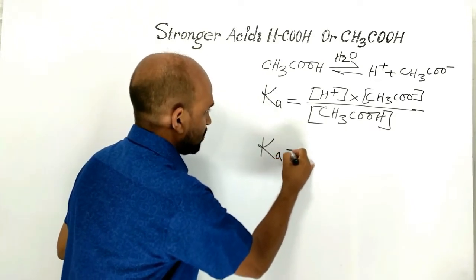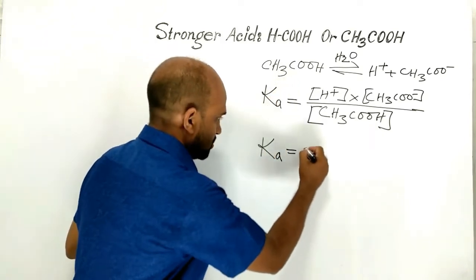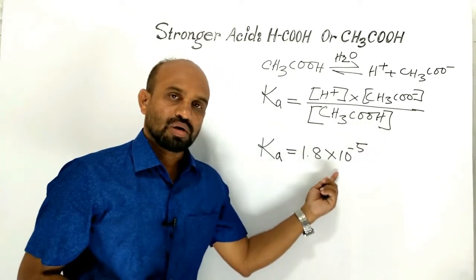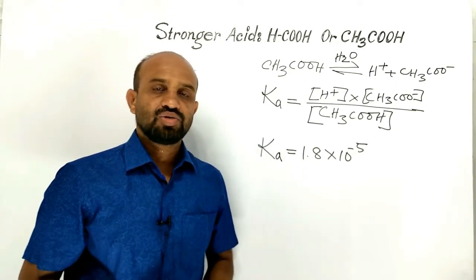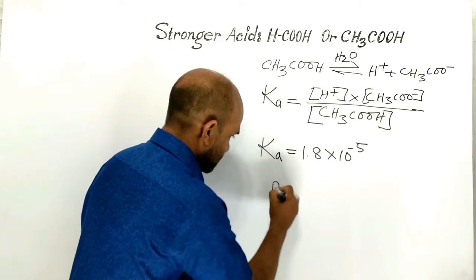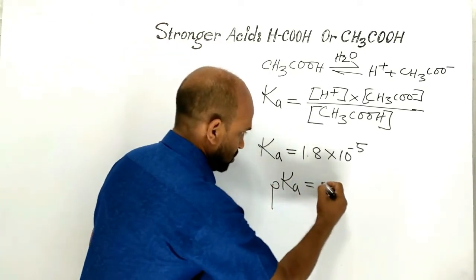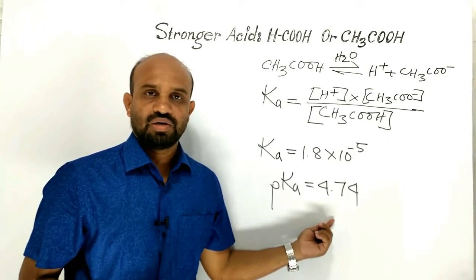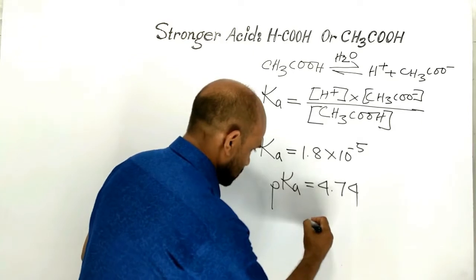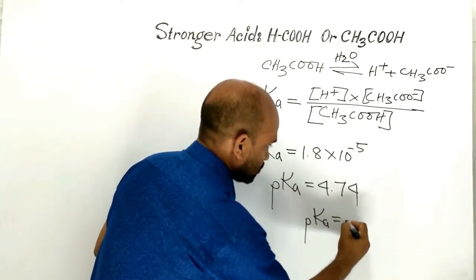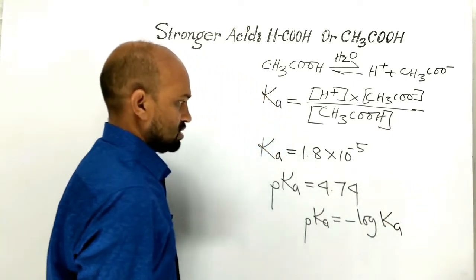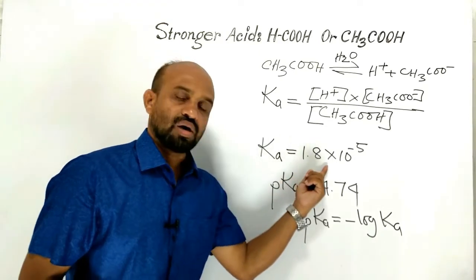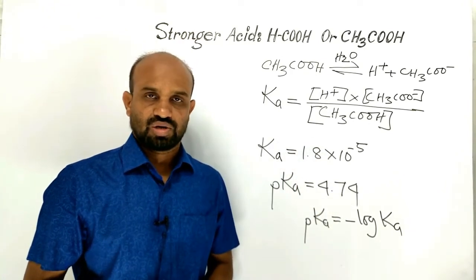Experimentally, the value of Ka for acetic acid is 1.8 × 10⁻⁵. Higher the value of Ka, the stronger the acid. The pKa of acetic acid is 4.74. Lower the value of pKa, the stronger the acid, because pKa = −log(Ka).